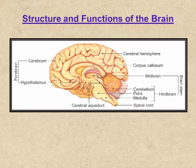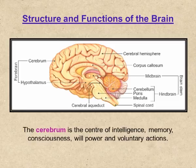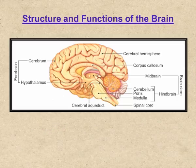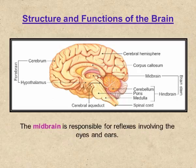The midbrain and the hindbrain collectively constitute the brain stem. The forebrain consists of the cerebrum and the hypothalamus. The cerebrum is the largest portion of the brain. It is divided into two cerebral hemispheres separated by a thick band of tissue called corpus callosum. The cerebrum is the center of intelligence, memory, consciousness, willpower, and voluntary actions. The hypothalamus controls body temperature and pituitary gland activity. The midbrain is a small tube-like part of the brain responsible for reflexes involving the eyes and the ears.